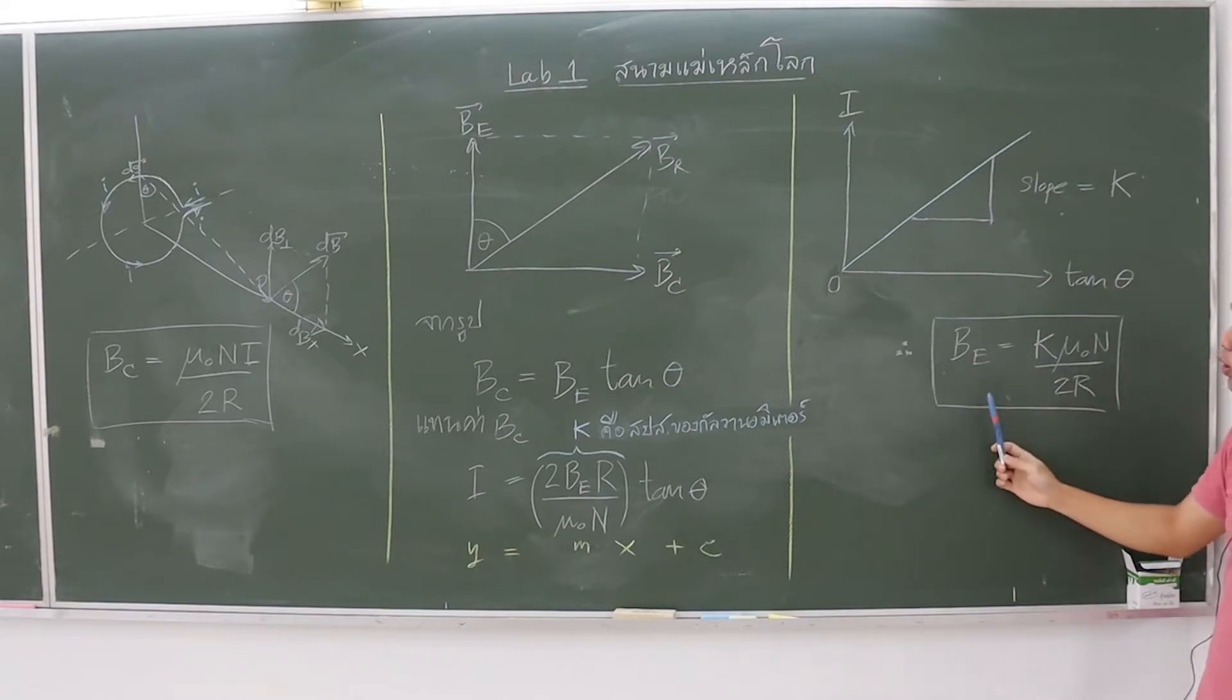Finally, the Earth's magnetic field can be calculated from K, the graph slope, times mu zero, N, and divide by 2 and R.